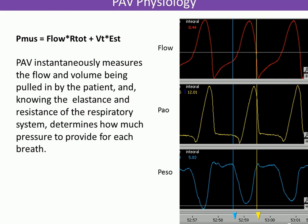You've seen this slide already and heard the discussion, but this illustrates what you see on the ventilator. If the gain of PAV is 50%, it means that 50% of the total pressure is made by the ventilator, and the other 50% is made by the patient.